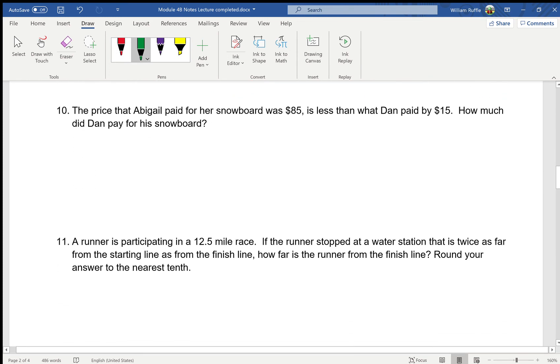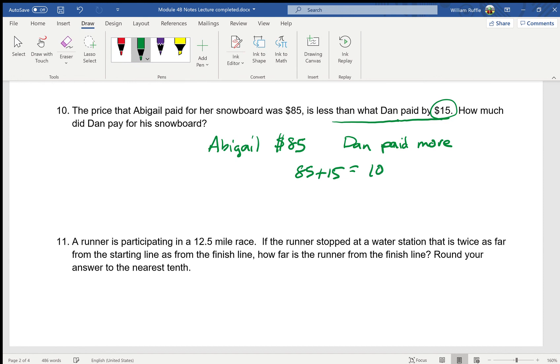All right. Now this question is truly meant to trick you. We're in lawyer-speak land, and this is very tricky. You got to be careful on this. Abigail paid $85 for her snowboard. Now she paid less than Dan by $15. So Dan paid more. So if Dan paid more by $15, I have to do 85 plus 15 equals $100. Everybody, when they quickly look at it, they see less than. So they think subtracting and do 85 minus 15. But that's wrong. And they're just trying to trick you with the vocabulary here, how they're wording the question. Abigail paid less. It says Abigail paid less than what Dan paid by $15 or Dan paid more.